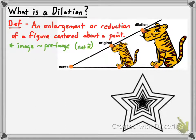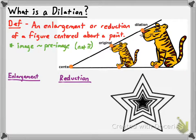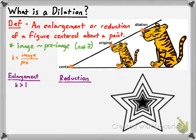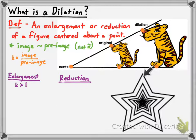A dilation can be an enlargement or a reduction. You're going to get used to using the letter K to represent a scale factor when referring to dilations. When you have an enlargement, the scale factor is always going to be greater than one — because the scale factor K expresses the ratio between the dimensions of the image and the dimensions of the pre-image. In an enlargement, the dimensions of the image are larger, so K > 1. In a reduction, the scale factor has to be between zero and one — for example, four-fifths — and that's why a reduction occurs.